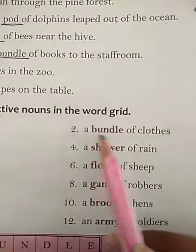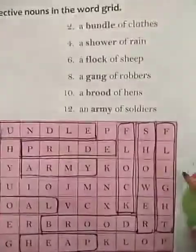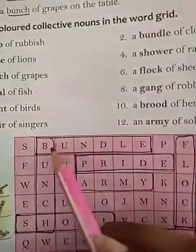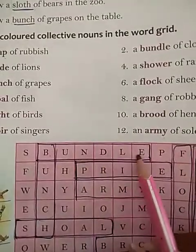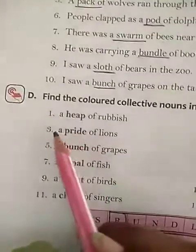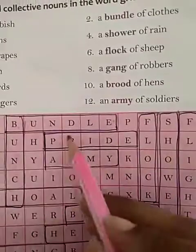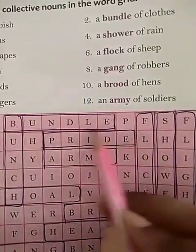Number 2: 'Bundle' — B-U-N-D-L-E. Identify the bundle in the grid and make a box. Number 3: 'Pride' — P-R-I-D-E. Make a box around it.